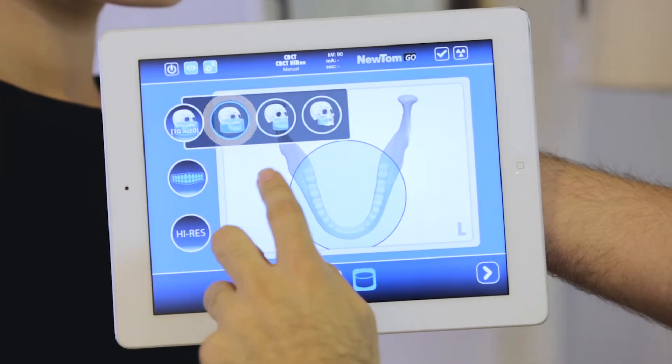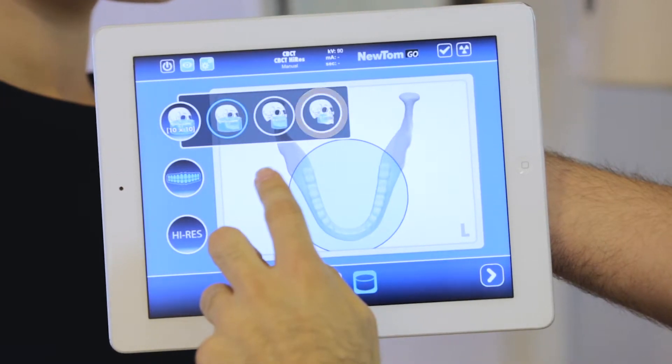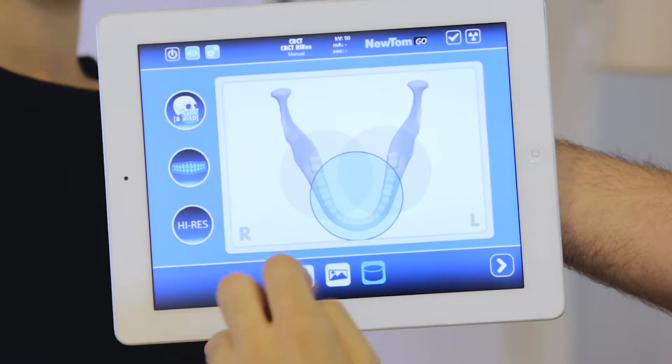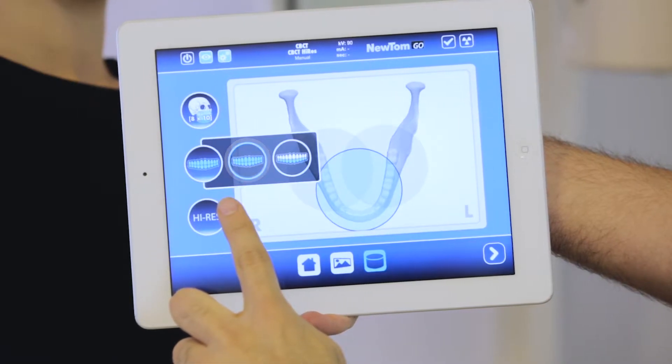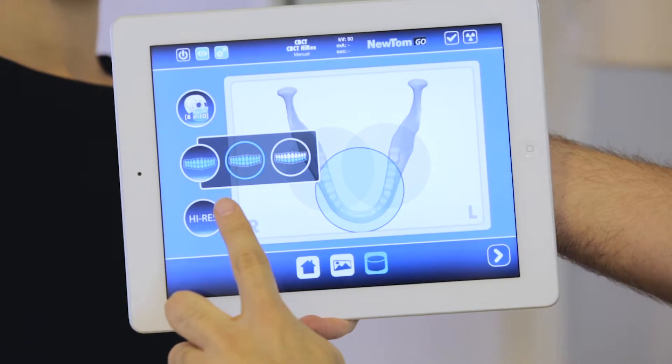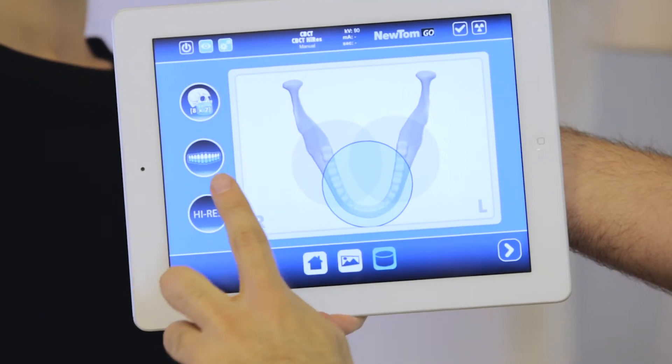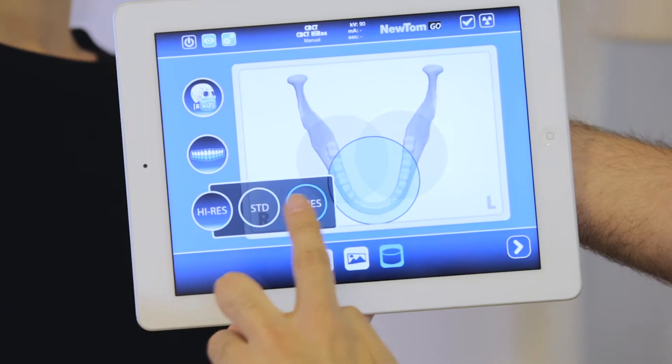Via the special icon, the dentist selects the size of the field of view from the list. He defines the center of volumetric reconstruction by selecting on the screen the anatomical region of interest. Finally, he chooses between standard resolution and high resolution.